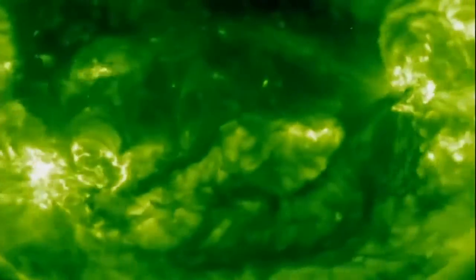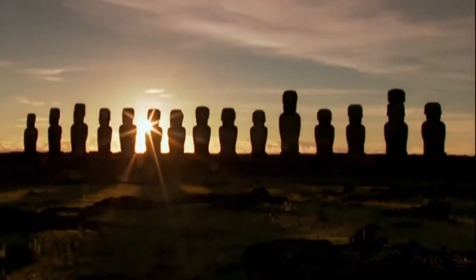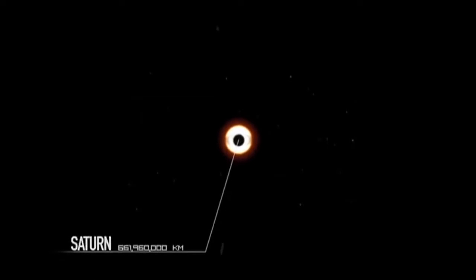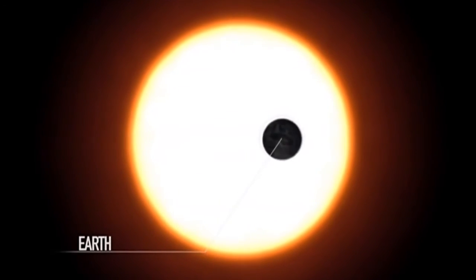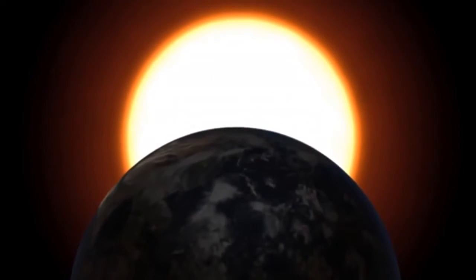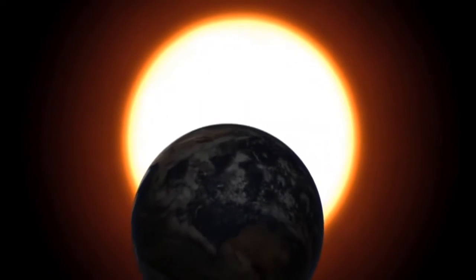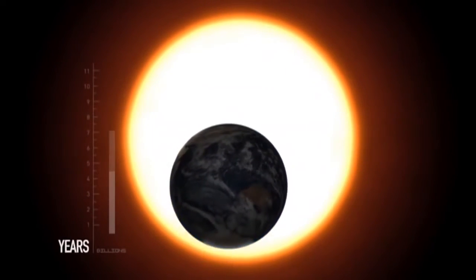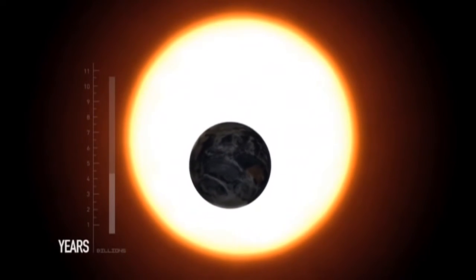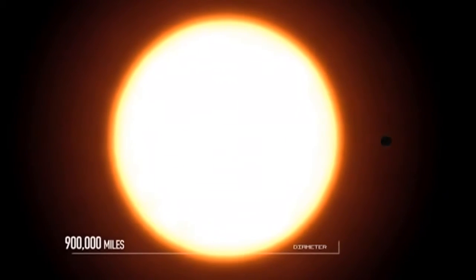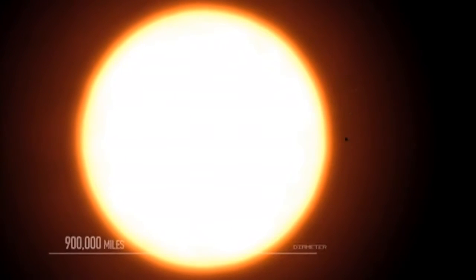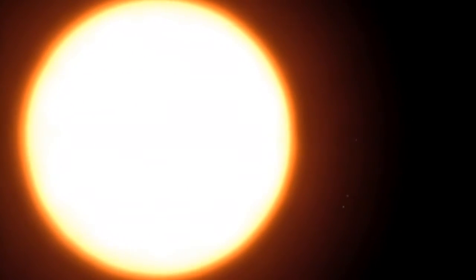Our robotic space probes never stop watching the Sun. With their help, scientists are working out the big questions about our star, and we already know a lot. The Sun is one of over 200 billion stars in our Milky Way galaxy, but it is our closest at 93 million miles away from Earth. Its light only takes eight minutes to reach Earth.